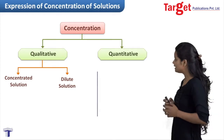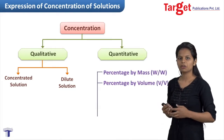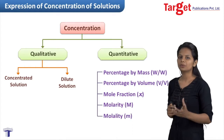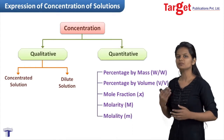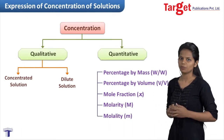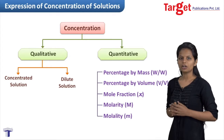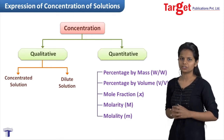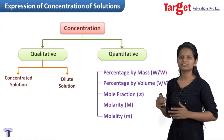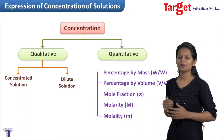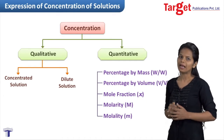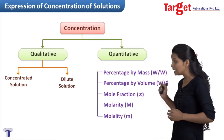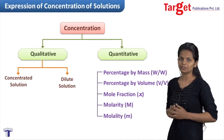The quantitative way is more efficient because here we are talking about numbers and percentages in particular. In this way, we are going to talk about five different ways of expressing concentration: percentage by mass, percentage by volume, mole fraction, molarity, and molality. We are going to have a look at each way of expressing concentration in detail.